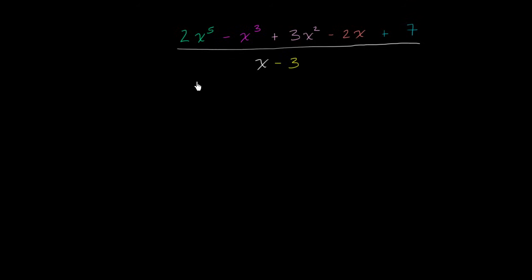So let's think about this step by step. The first thing I want to do is write all of the coefficients of the numerator. So I have a 2, I have to be careful here. Because the 2 is a coefficient for x to the fifth. I have no x to the fourth term. So for the x to the fourth term, let me start over.